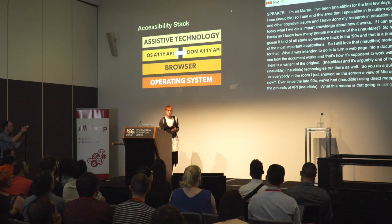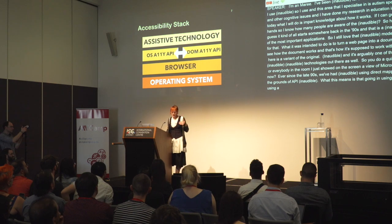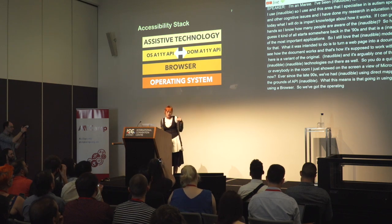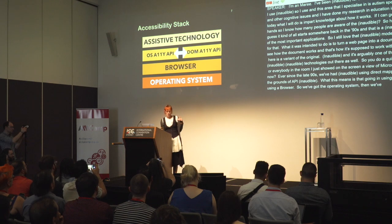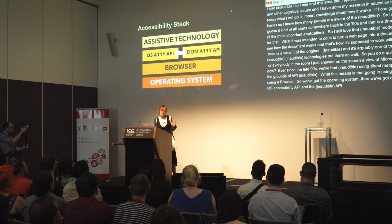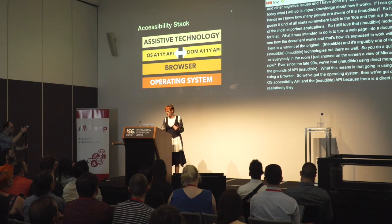Let's have a little look at the stack. At the bottom we've got the operating system, then on top of that the browser. At the next layer, the OS accessibility API and the DOM accessibility API — because there is a direct mapping there, they're at that same level. And then above that is the assistive technology, because they speak directly to assistive technology and not to the UI.